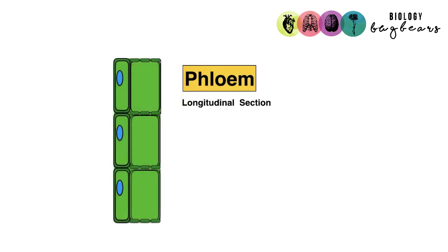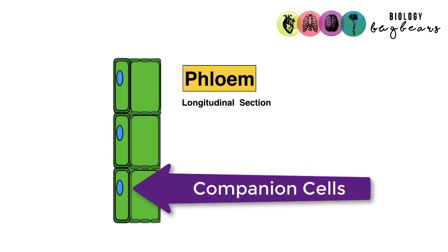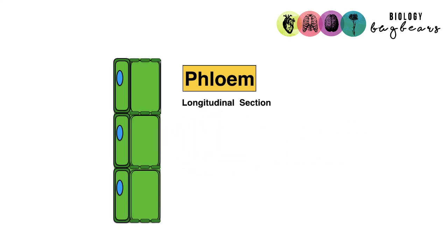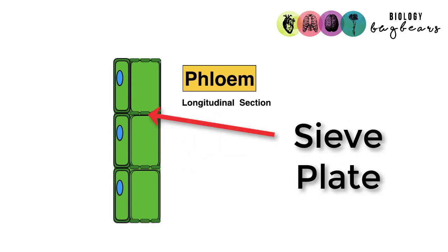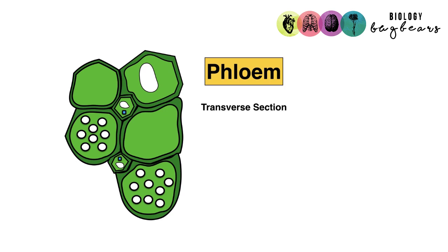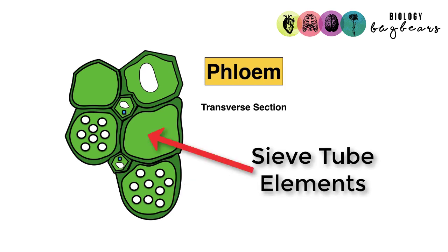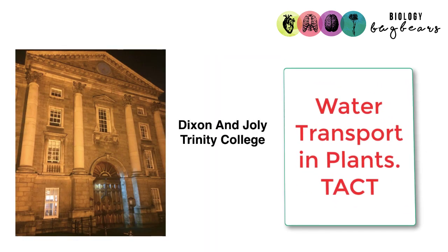The next type of vascular tissue is phloem. It transports food made in the leaf down to the plant and is living tissue, because it has companion cells attached to sieve tube elements. Separating each sieve tube element is a sieve plate — a structure with holes to allow food to pass from one sieve tube element to the next. This transverse section of phloem is one of the more difficult diagrams to label and causes problems in exams, so be sure you can identify the sieve plates, sieve tube elements, and companion cells. Remember it was Dixon and Joly from Trinity College Dublin who developed the theory of how water is transported in plants — TACT. There is a separate video on that.